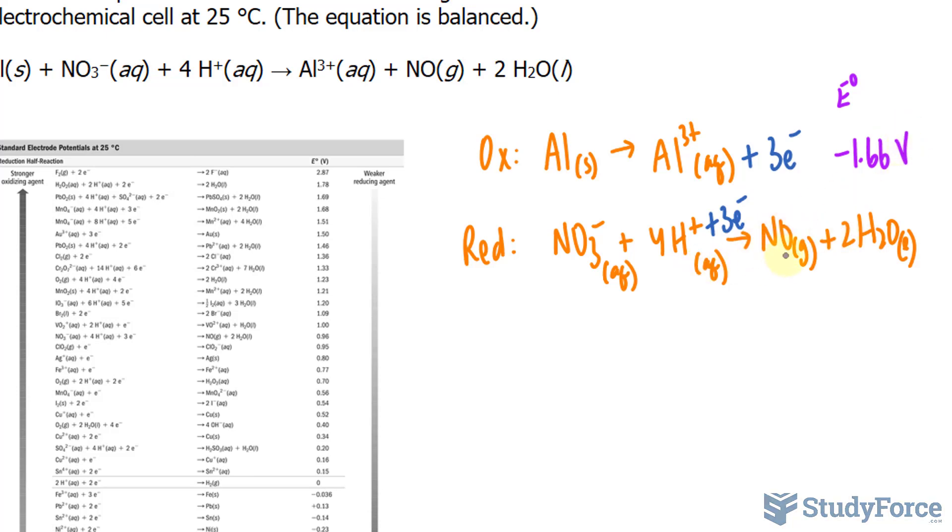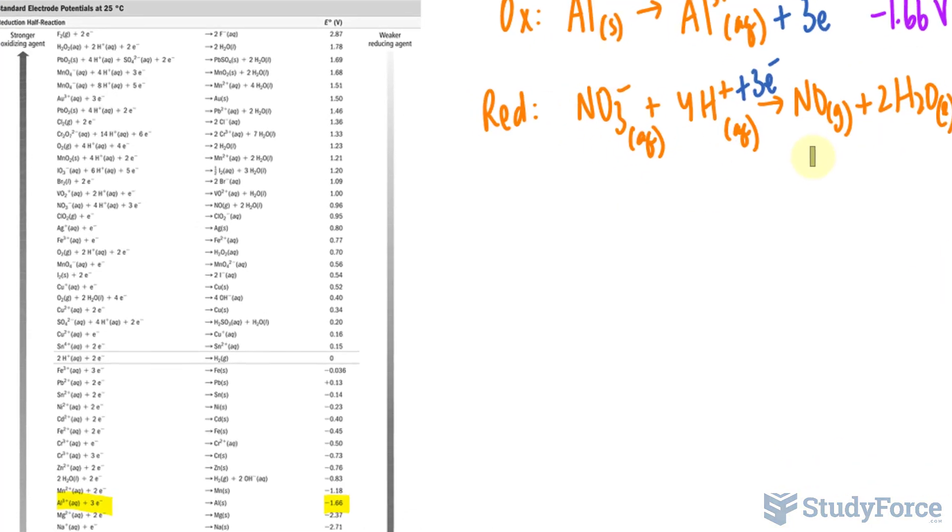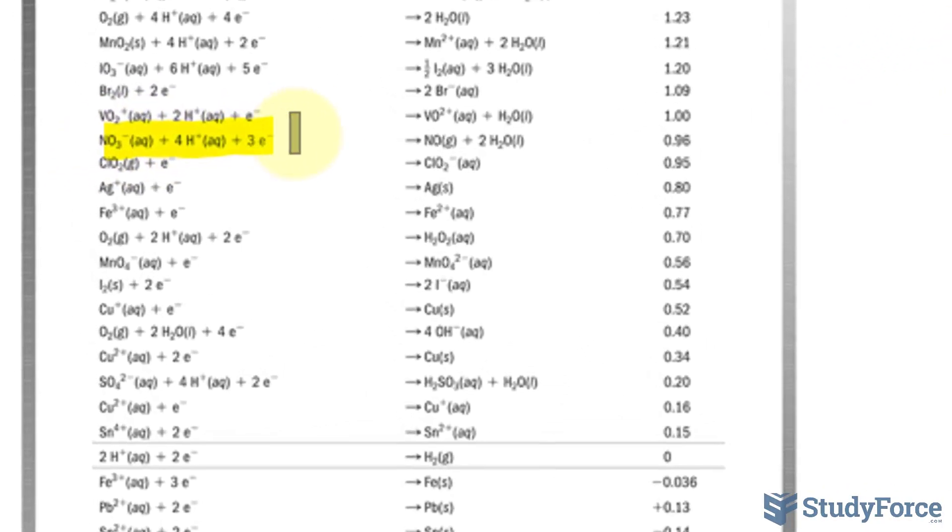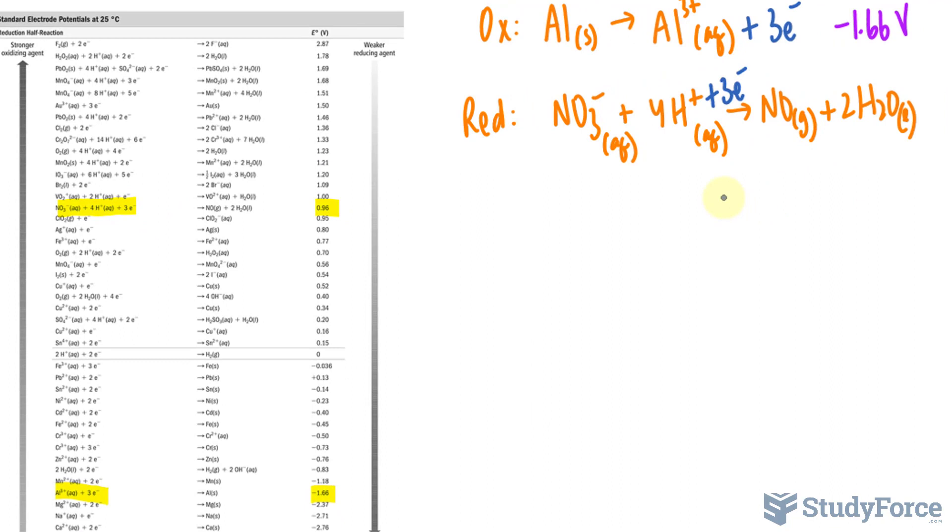For this one, let's find out where NO and two water molecules are. This reaction can be found right here, and as you can see, it has an electrode potential that's positive of 0.96 volts.